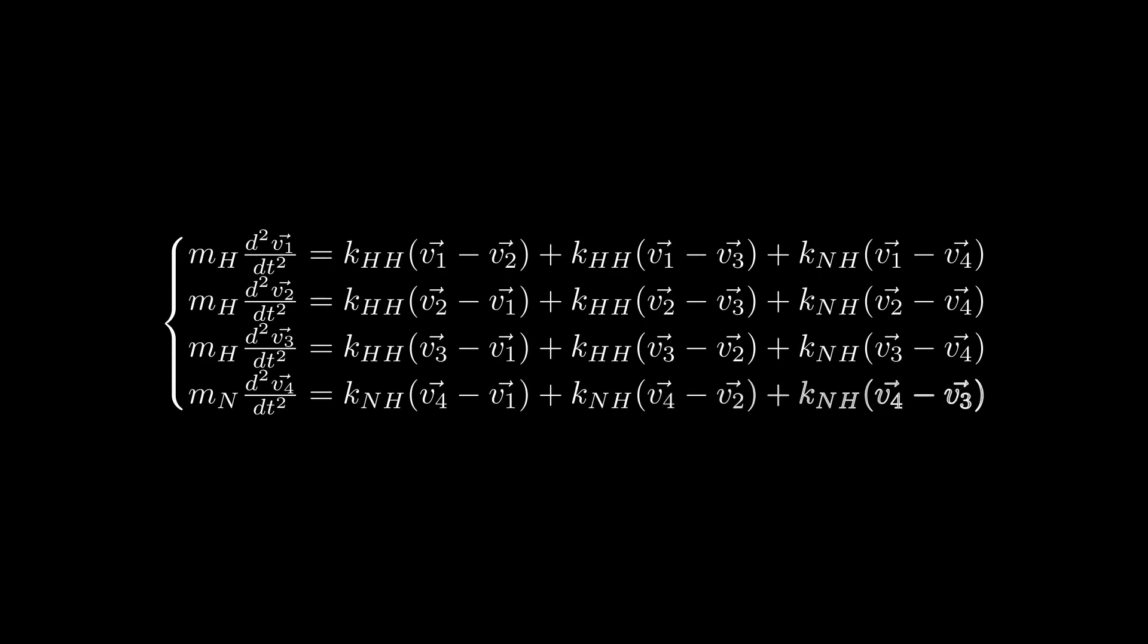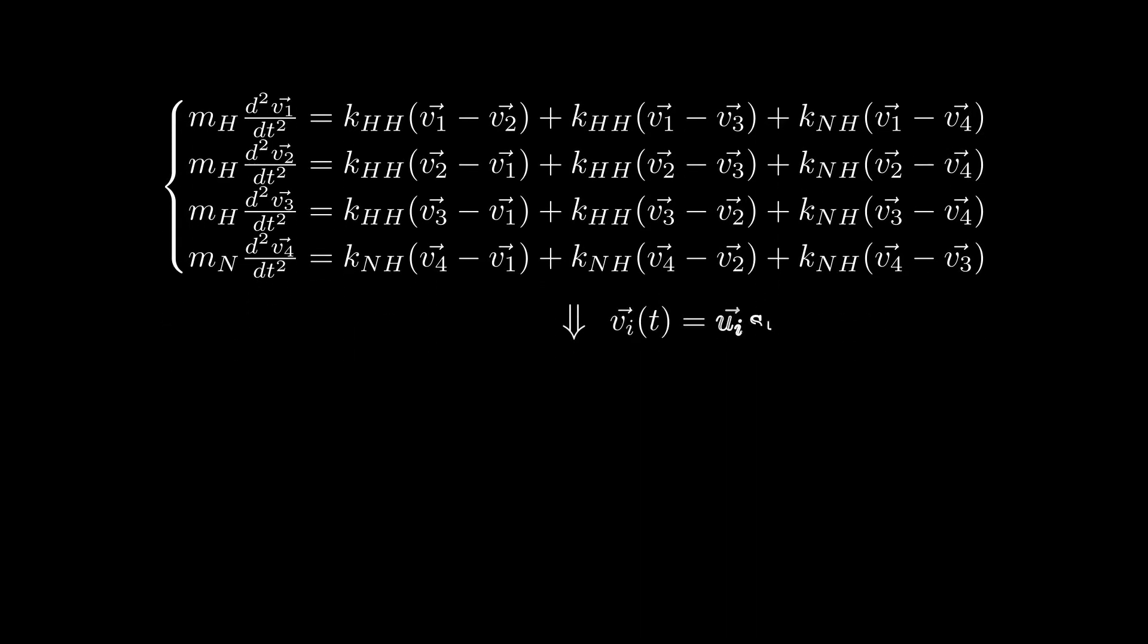If we set each time dependent v_i equals to some u_i times sine of omega t, so we do this for every atom, which means we are looking for oscillations in the u_i's directions, then the equations simplify.